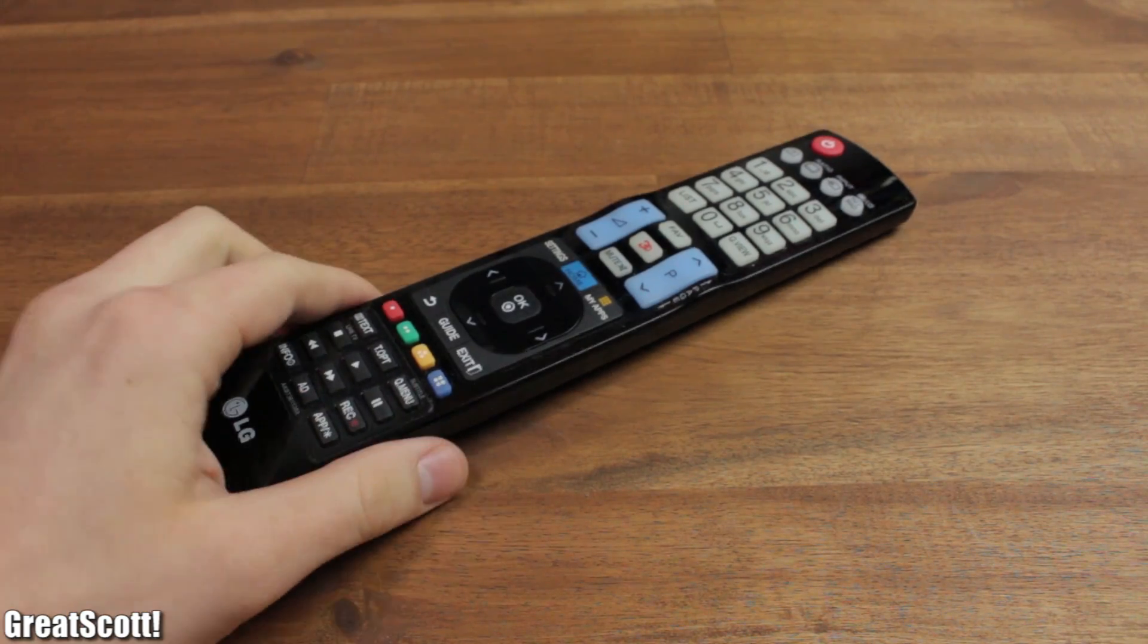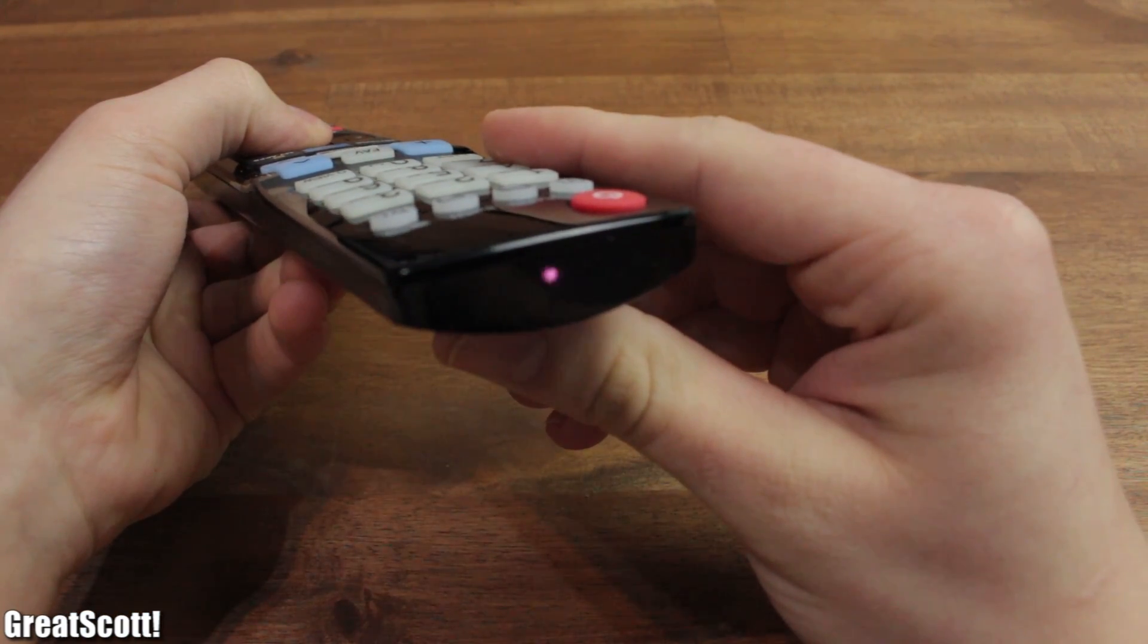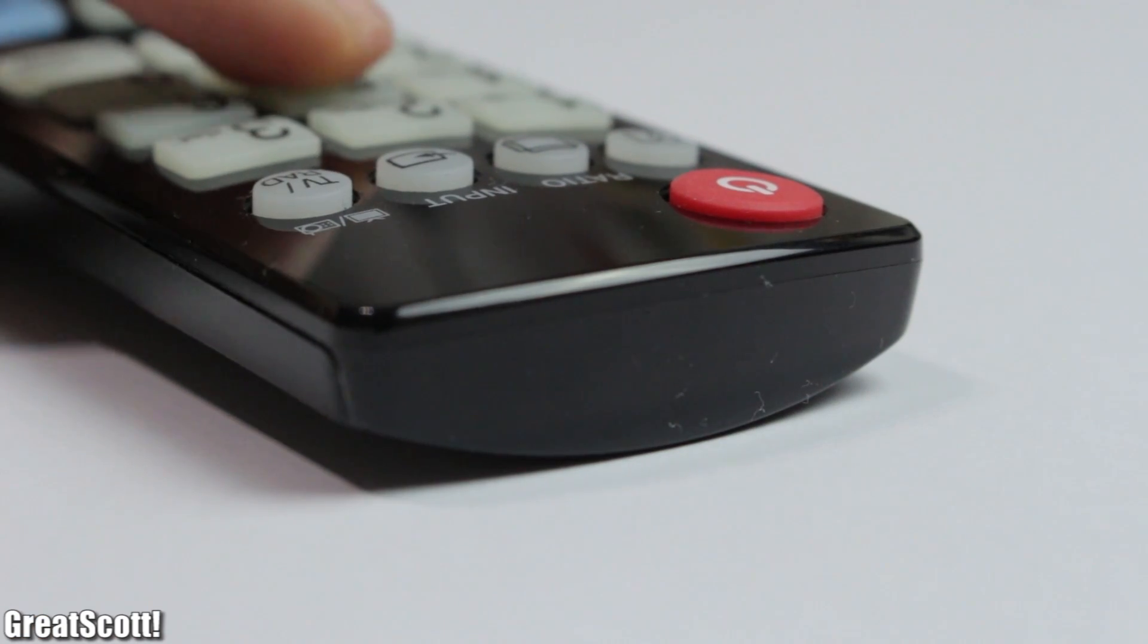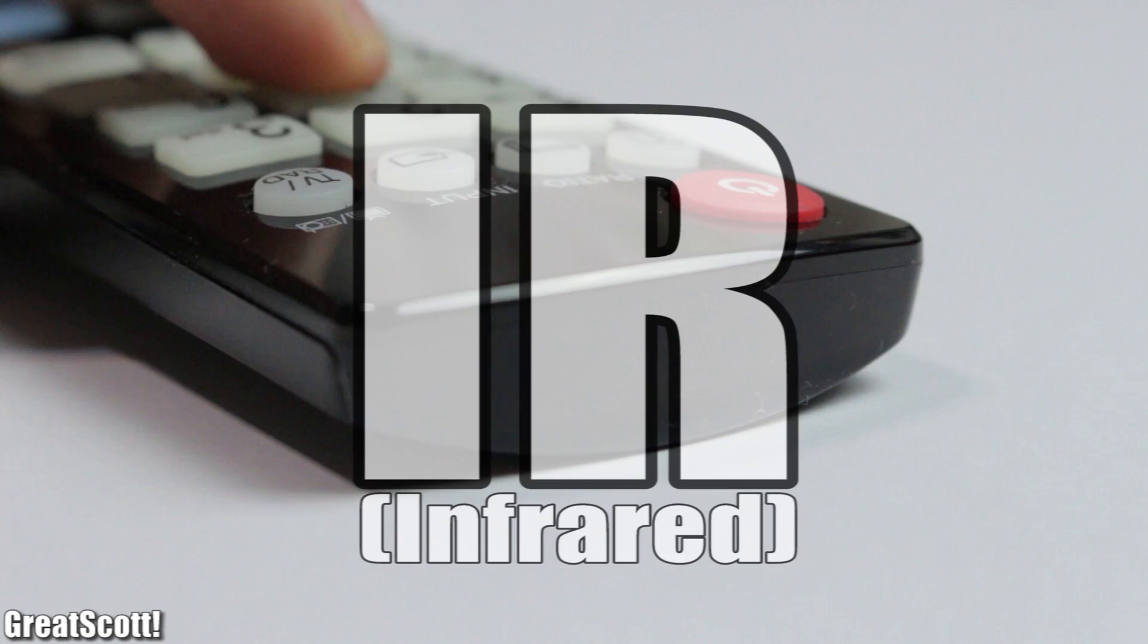First of all, let's inspect the remote and see how it communicates with the TV. When I press a button, you can see that a LED in front flickers rapidly. You can see it on camera, but it is actually not visible with the human eye, because this is infrared light.